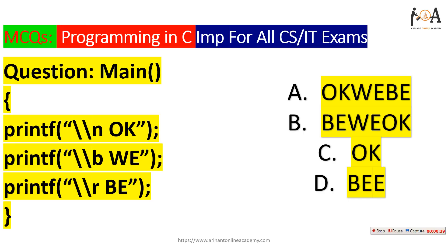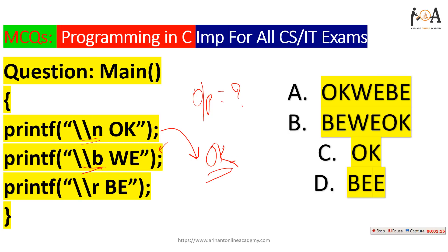Let's start. The first question gives us a main function with three printf statements, and we have to predict the output. The first printf prints 'ok' followed by a newline, so 'ok' is printed. The second statement has a backspace character \b, which moves the cursor back one position, removing 'k', leaving only 'O', then prints 'WE', so after the second statement the output is 'OWE'.